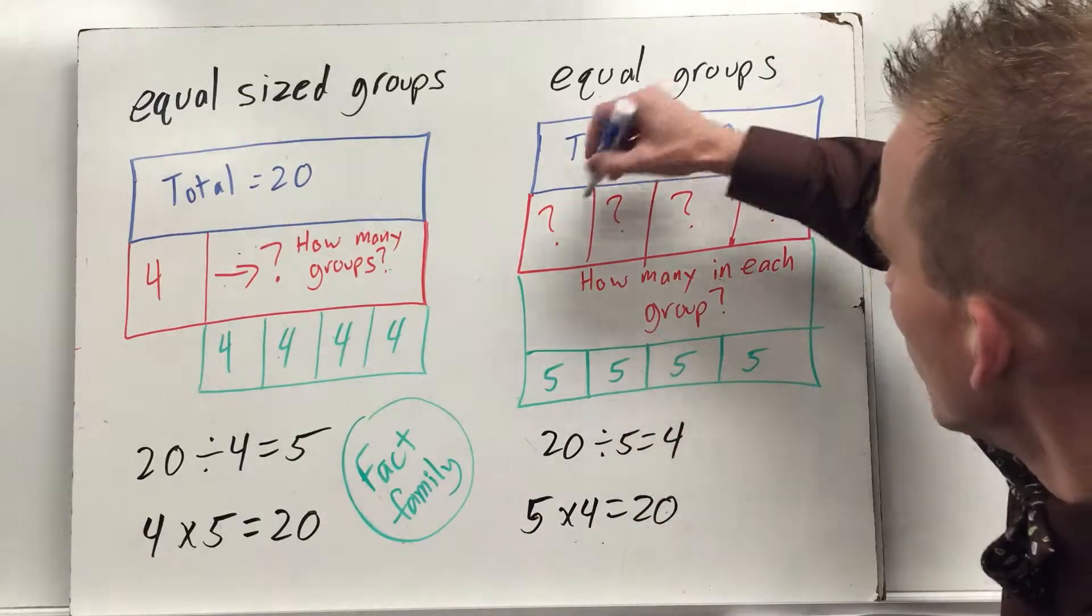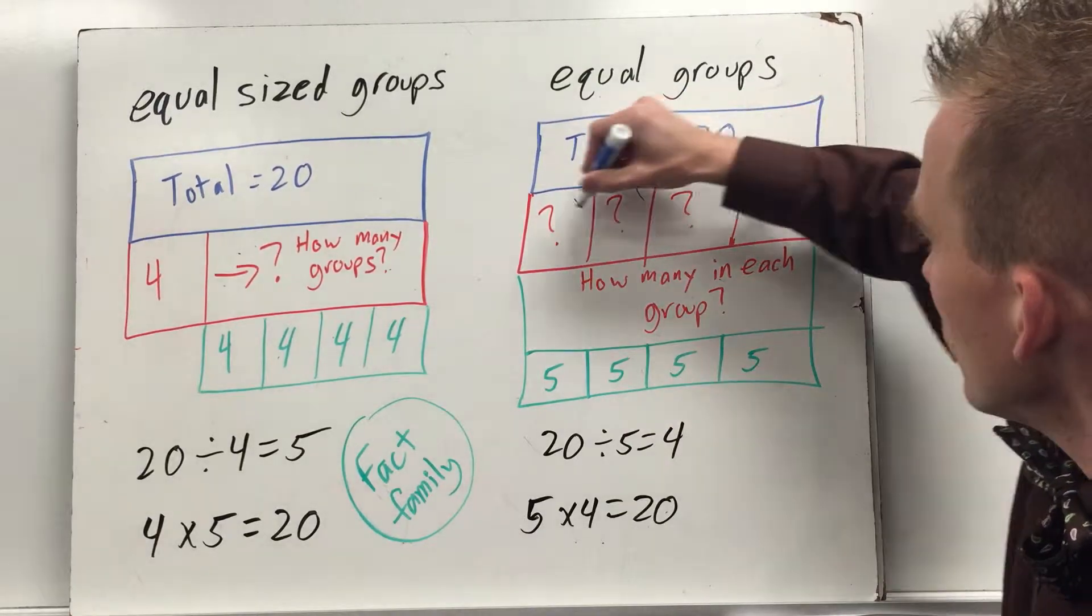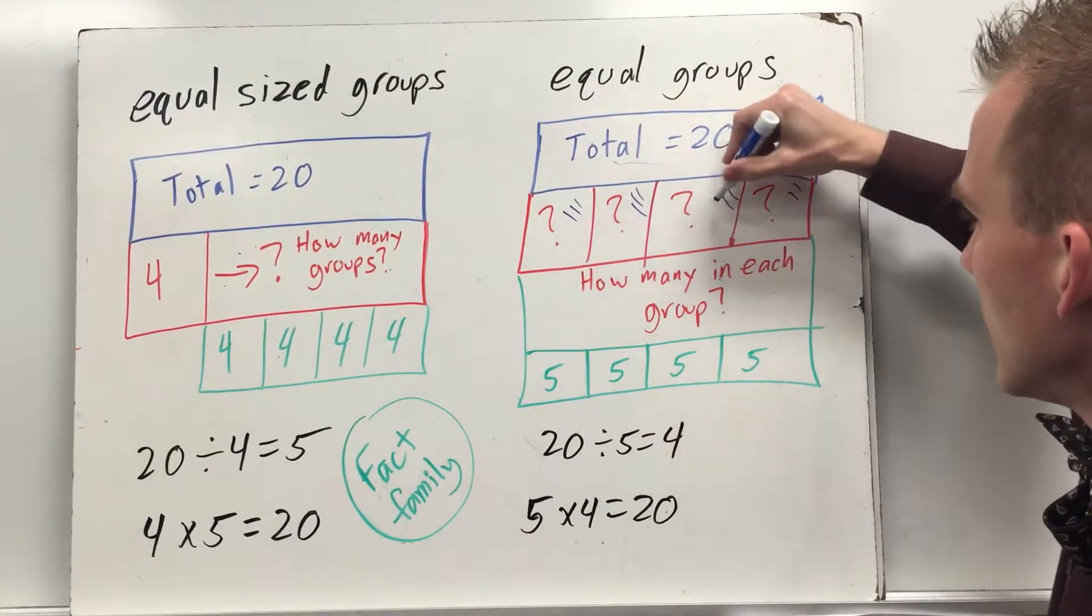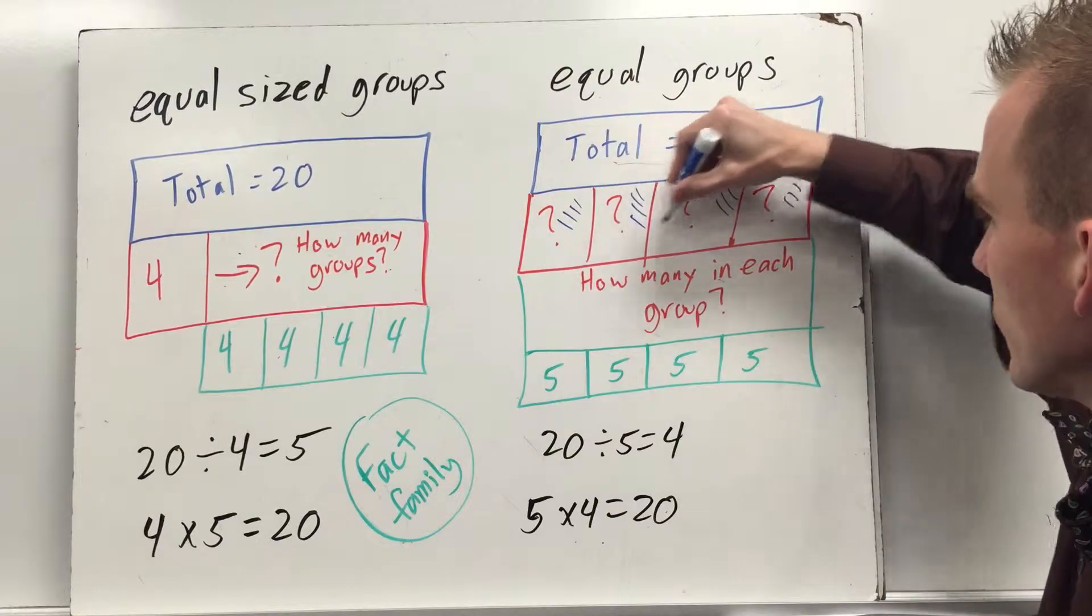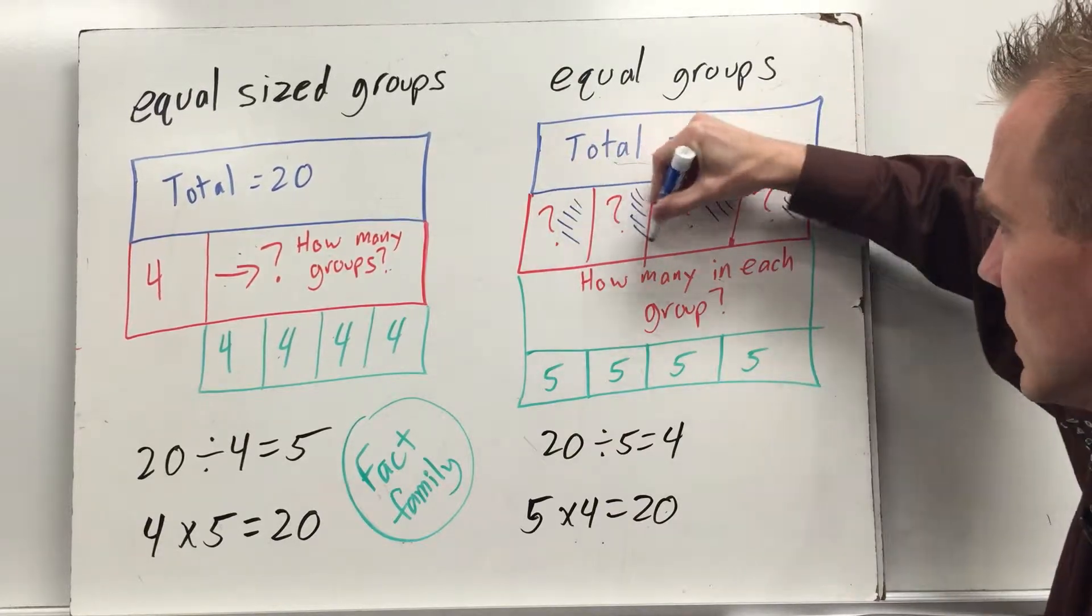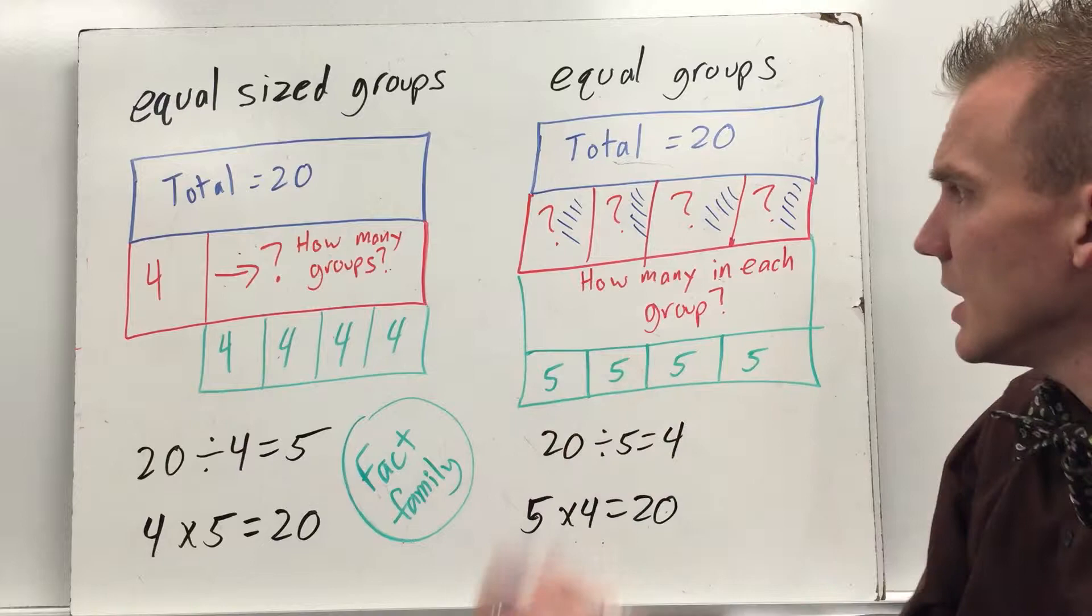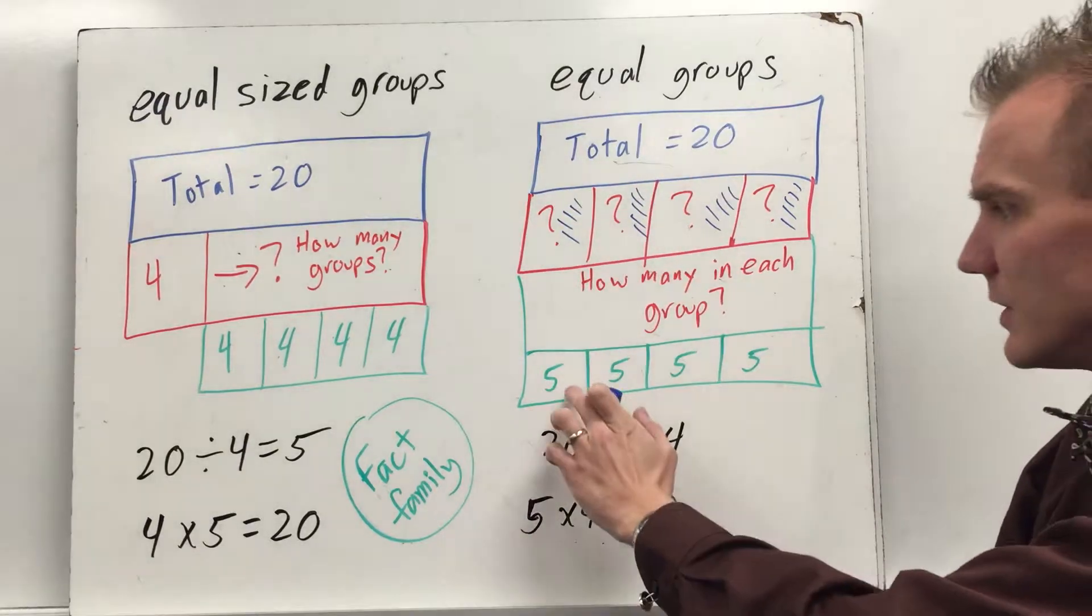Well, 20 divided by 4 you can draw your four groups. I'm going to split it up and put 1, 2, 3, 4, 5, 6, 7, 8, 9, 10, 11, 12, 13, 14, 15, 16, 17, 18, 19, 20. I have 20. Counting each group: 1, 2, 3, 4, 5. So there's 5 in each group.